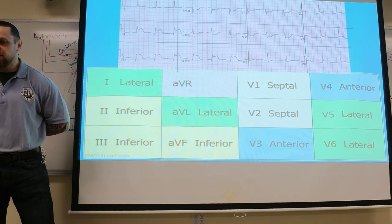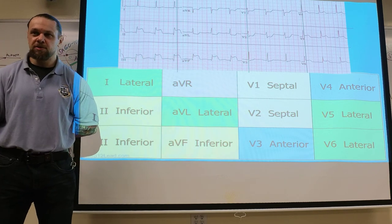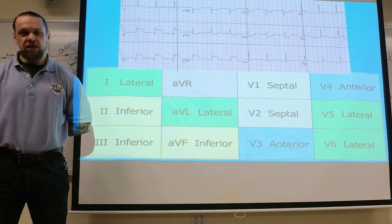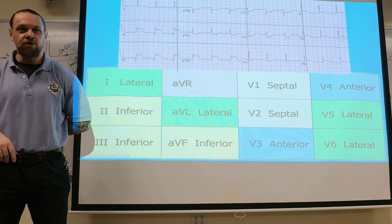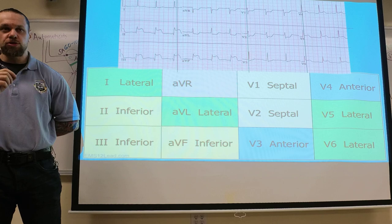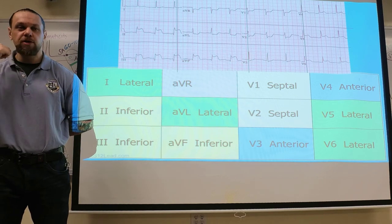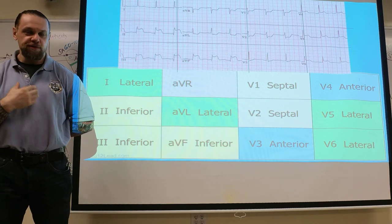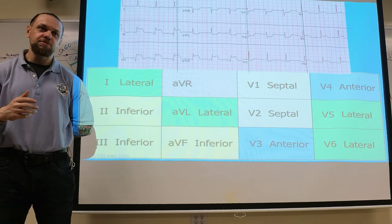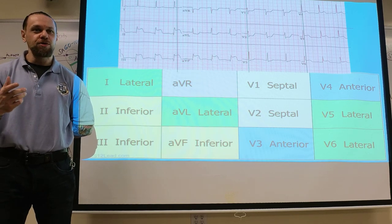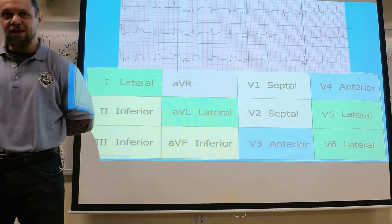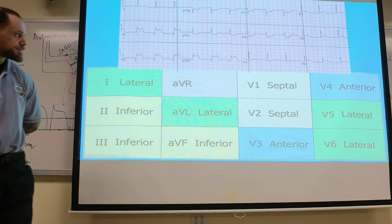To see the posterior wall, you do a 15-lead EKG. I did one case — my partner Joey was with me. I ran the EKG, saw no elevations, but something told me there was a possibility of posterior MI. I took the leads off the front and put them in the back relatively quickly. Joey looked at me and said, 'You know those go in the front, right?' I told him, 'Just give me a second and you'll see what happens.'